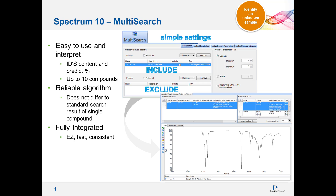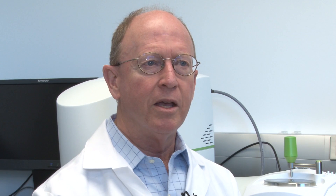PerkinElmer once again comes to the lab rescue with our new multi-search capability. Multi-search was specifically developed to identify these unknown mixtures. With multi-search, a user can search and identify up to 10 individual components in a mixture, just like traditional search routines. This works best with user-generated libraries and with any commercial libraries. But the main difference is that multi-search looks for similarities between unknown compounds and combinations of reference compounds in the search library.